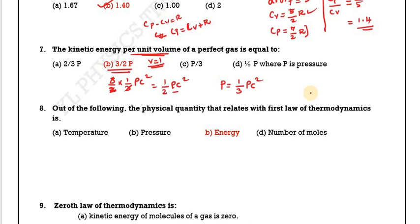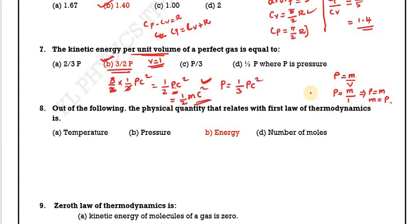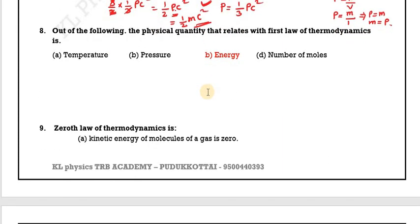For kinetic energy per unit volume, we set volume equal to 1. Since rho equals mass per volume and volume equals 1, rho equals m. Substituting, kinetic energy equals 1/2 m c squared per unit volume, which equals 3/2 p. Therefore the kinetic energy per unit volume of a perfect gas is 3/2 p.